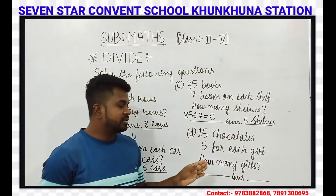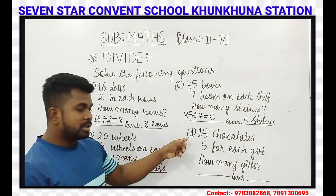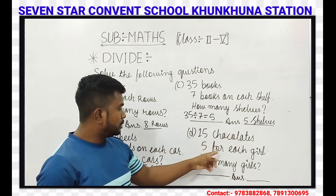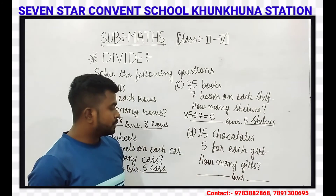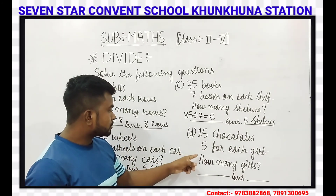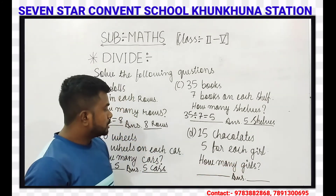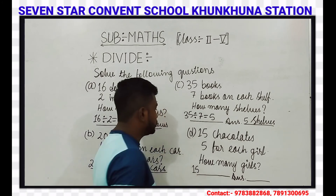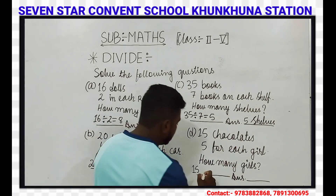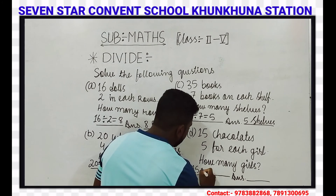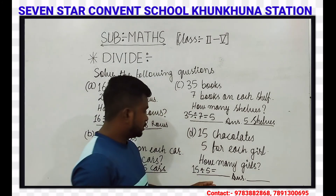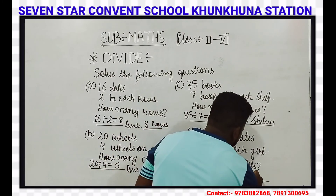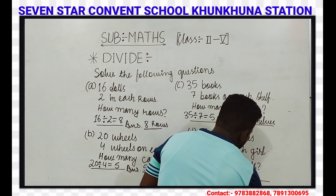Now the last one, number D. We have 15 chocolates, 5 for each girl. How many girls? We write here: 15 divided by 5 is equal to 3. That means 3 girls.